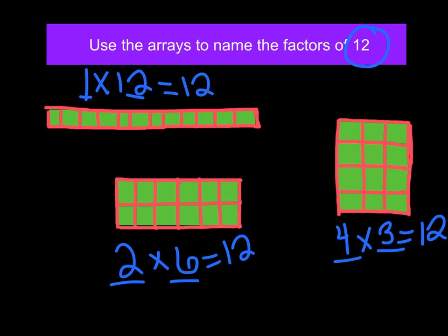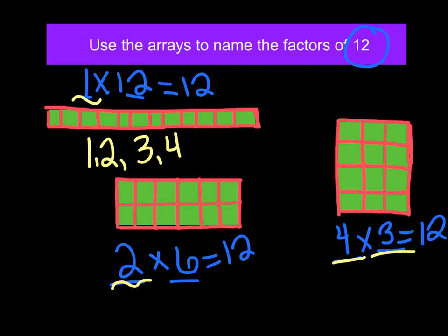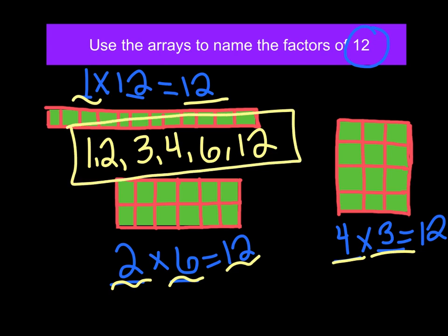Now if I wanted to list all my factors, I'm going to make sure that I list them from least to greatest order. Starting with my smallest one, which was 1, then 2, then 3, then 4, then 6, and then 12. And those are the complete list of my factors of 12.